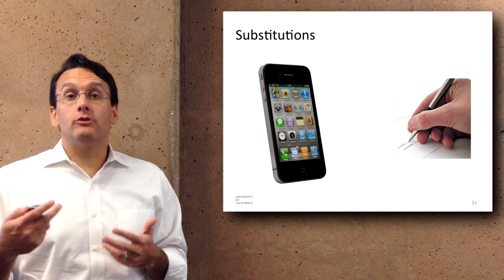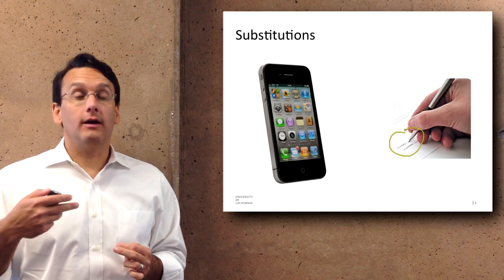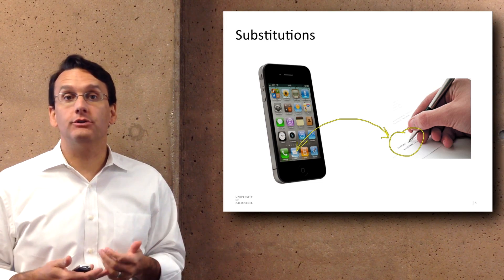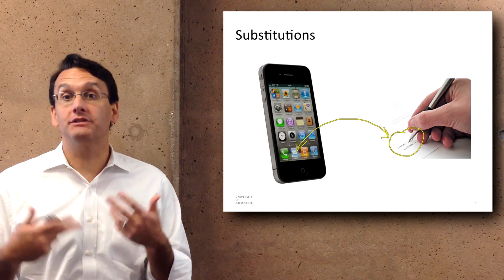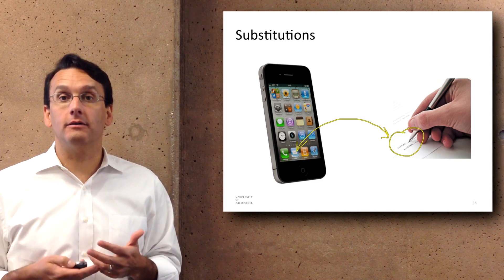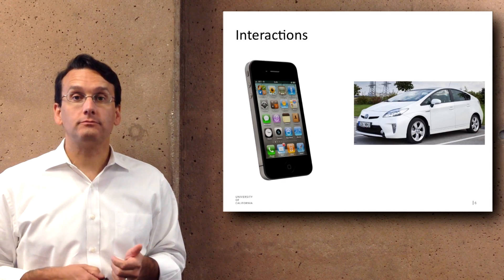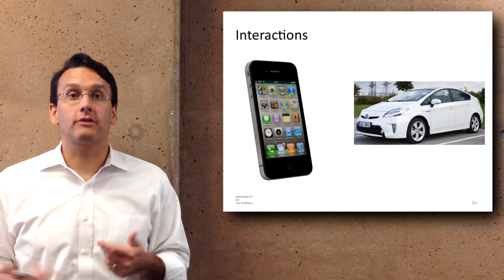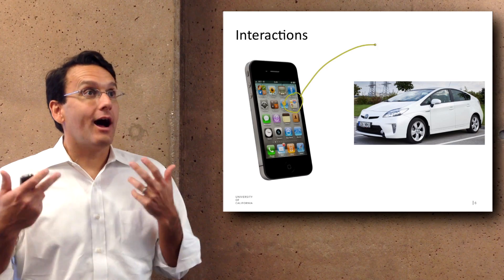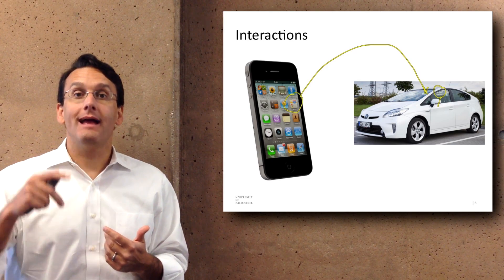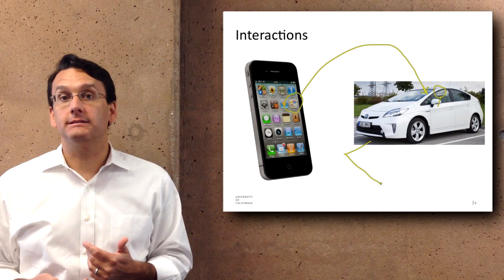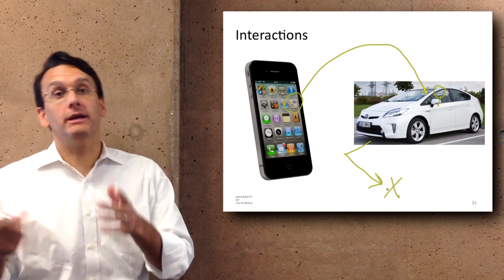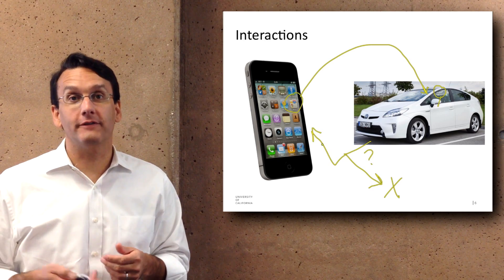iPhones also lead to a variety of different substitutions. For example, people might not write letters because they instead send an email. This shifting of communication style can have a very big impact on the world. There are also a range of interactions this device has with other aspects of the world. For example, I use my iPhone for navigation, which keeps me from having to drive extra distances because I can map out my route and not get lost as much.